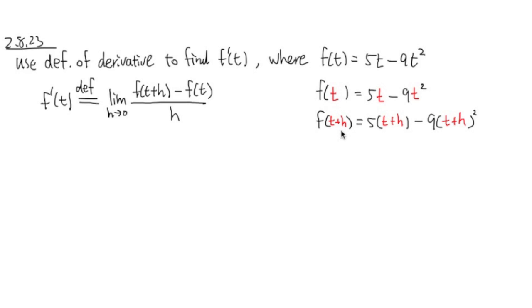So f of t plus h, the setup will be 5 parentheses t plus h. This gets replaced with the original t. Minus 9 parentheses t plus h, and then square. You replace t plus h with the t. And this is the part that you have to show me your math algebra skills. Let's do it.